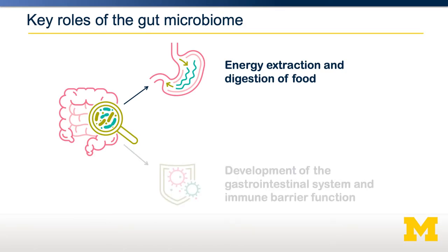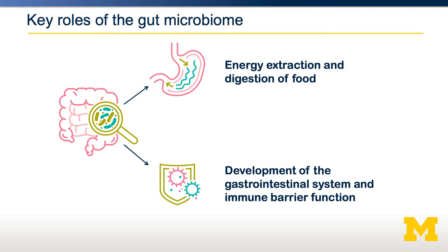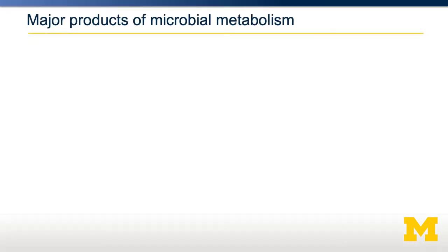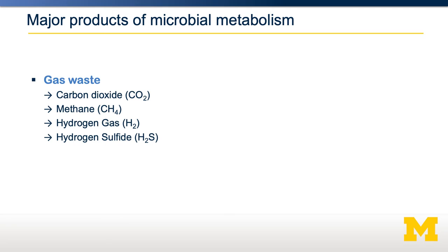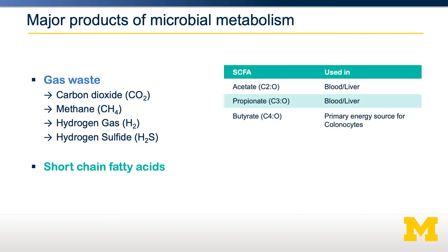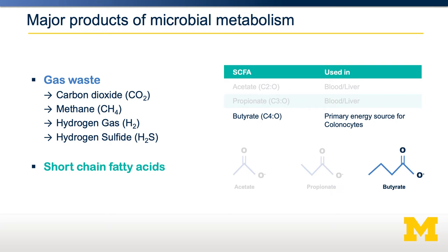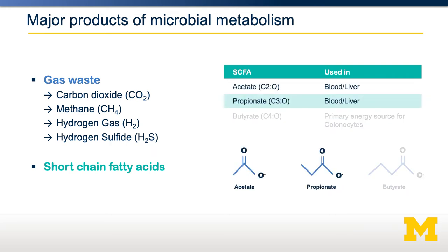There are two important roles of the gut microbiome. The first is further digestion and energy extraction of food. When bacteria ferment fibers and other foods that reach the large intestine, they produce several products — including gaseous byproducts such as carbon dioxide, methane, and hydrogen sulfide — as well as short-chain fatty acids such as acetate, propionate, and butyrate. These small two-to-four carbon acids are generated by gut bacteria and used by our bodies. For example, butyrate is the primary energy source for colonocytes, the cells lining the colon. Acetate and propionate can escape into the blood and are processed in the liver and other tissues, exerting biological functions we are just starting to understand.